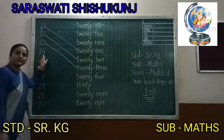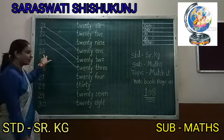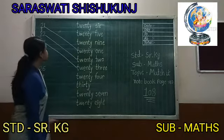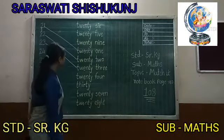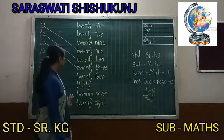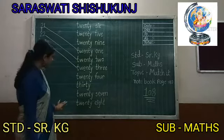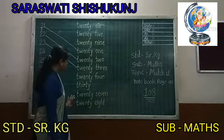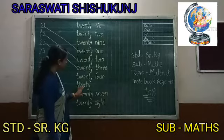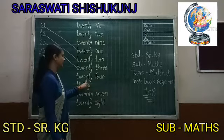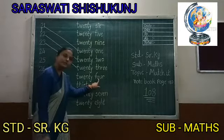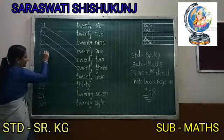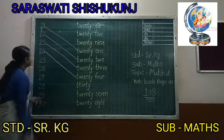Now 24. Where is number 24? Where is their number name? T, W, E, N, T, Y — Twenty. F, O, U, R — 4. Twenty Four. Yes, this is 24. So we have to match here.